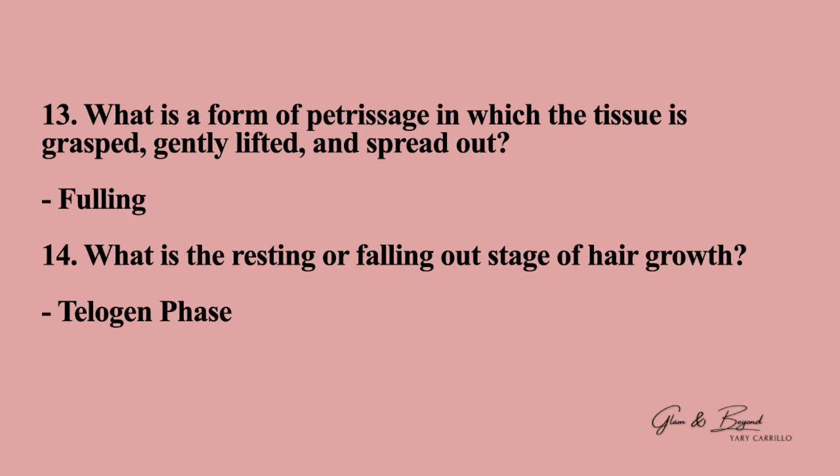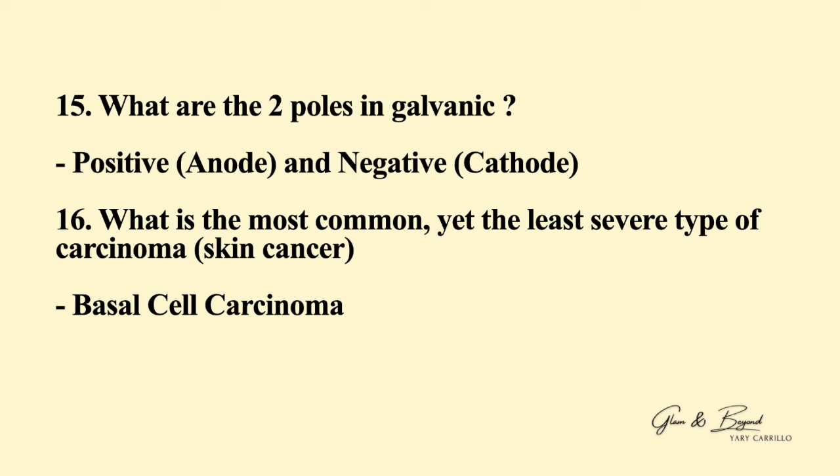Number fourteen: what is the resting or falling out stage of hair growth? The answer is the telogen phase. Number fifteen: what are the two poles in galvanic? The answer is positive, also known as an anode, and negative, also known as a cathode.